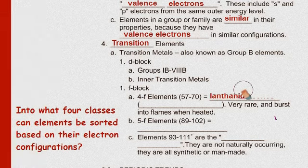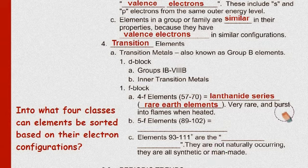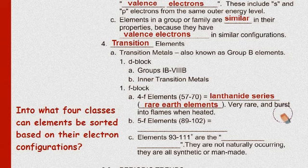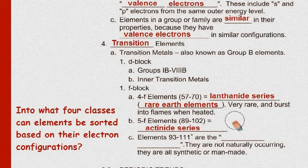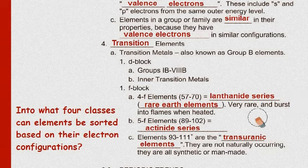Okay. The four F lift elements are known as the lanthanide series, also known as the rare earth elements. They are very rare and they burst into flames when you heat them. Really pretty cool. The five F lift elements are called the actinide series. Okay. And the elements greater than 93 are the transuranic elements or the transuranium elements. Trans. Trans. Transuranium elements. They do not occur in nature. They are all man-made and the largest naturally occurring nucleus is the uranium nucleus. That is the largest one we have.